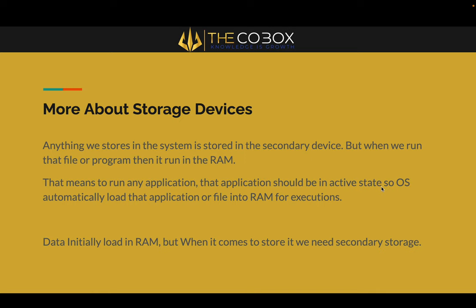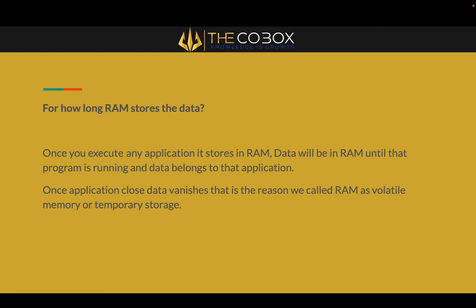For any application to run, it must be in an active state. The OS automatically loads the application or file into RAM for execution — data is initially loaded into RAM. So before storing data, if you are running anything it goes directly into RAM. If you want to save it permanently, you use secondary storage. The main question is: how long does RAM store data? Data stays in RAM while the program is running.